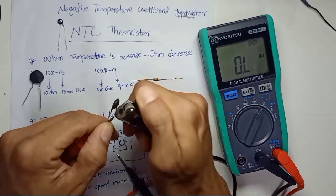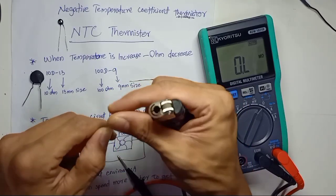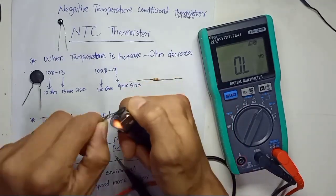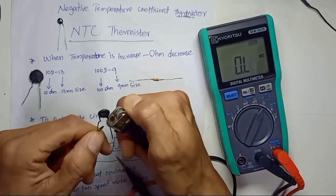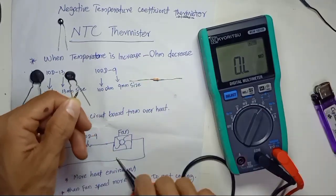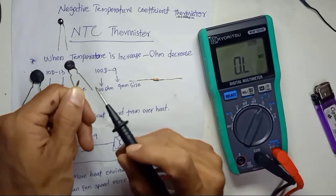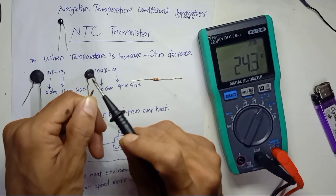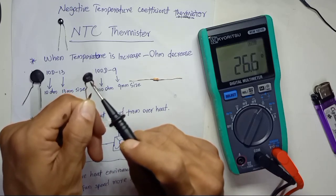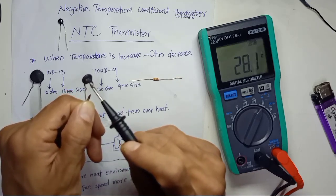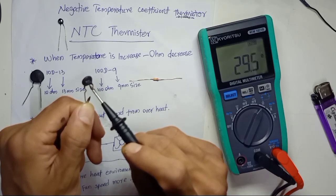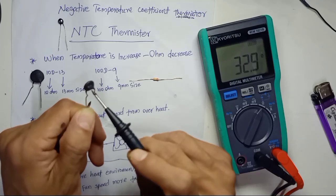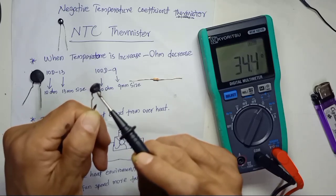Currently at 122 ohms. Applying heat now. After heating, the value dropped to 25–27 ohms — significantly decreased. Now as the thermistor cools back down, the ohm is already increasing again, because the thermistor is getting cold.